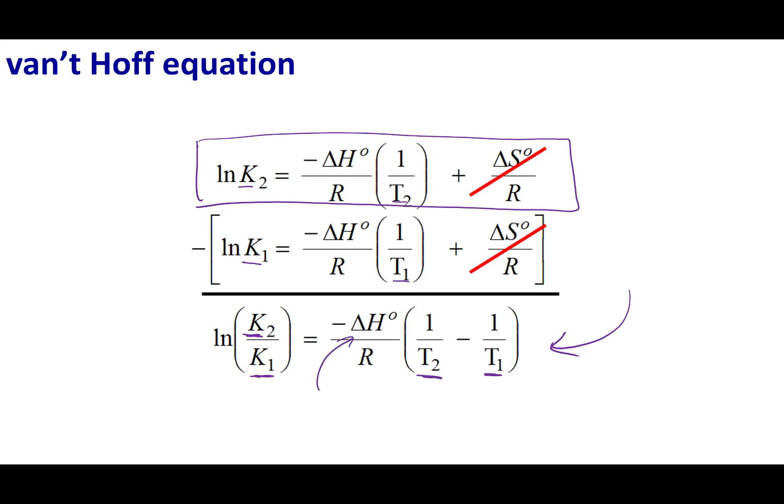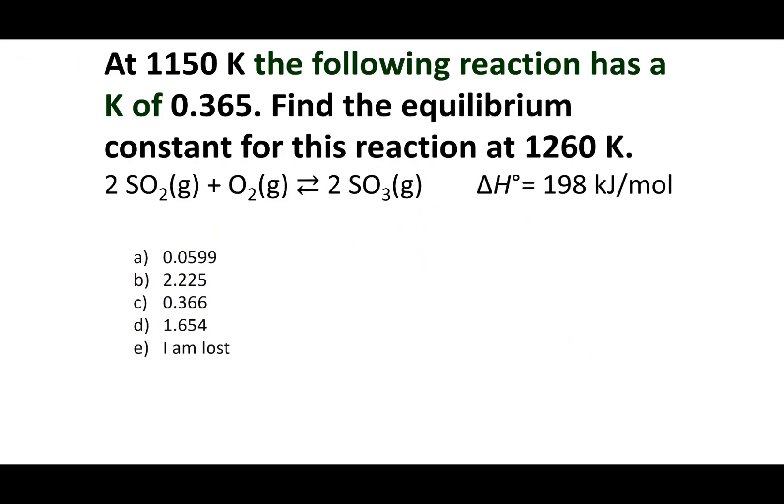This is a very powerful equation — you can calculate equilibrium constants at different temperatures. As an industrial chemist, you can go to your boss and say we can shift our equilibrium, making more products or reactants, by simply changing the temperature. Changing temperature costs money in an industrial process, so you can determine whether it's worth it.